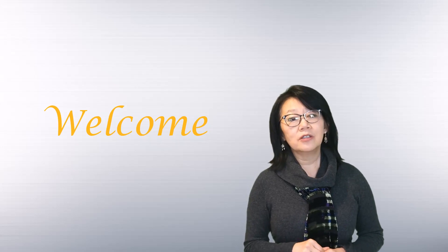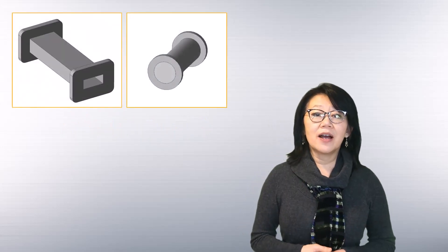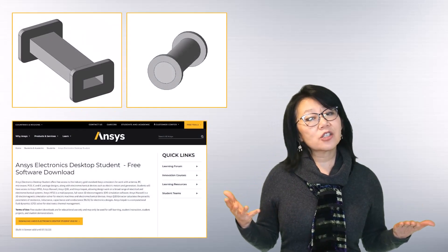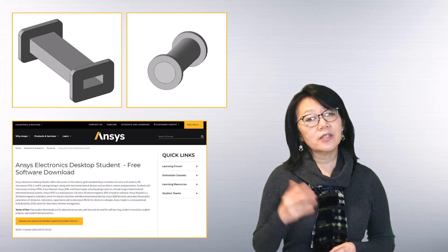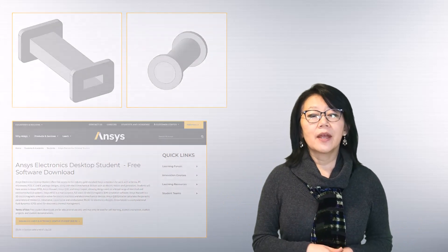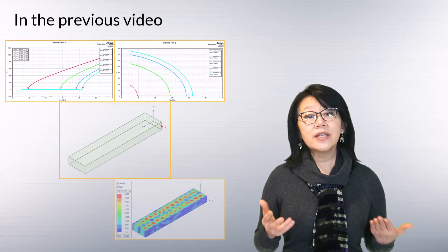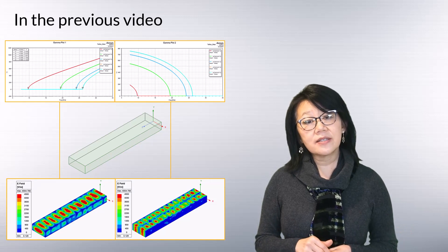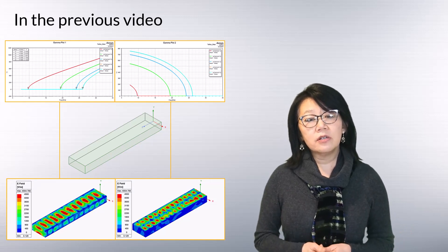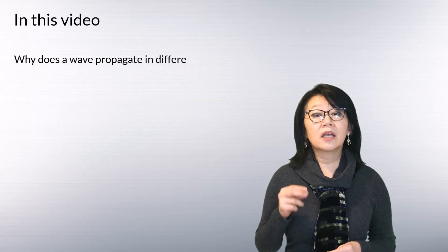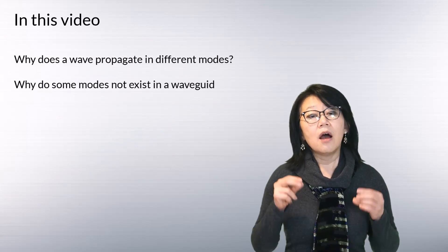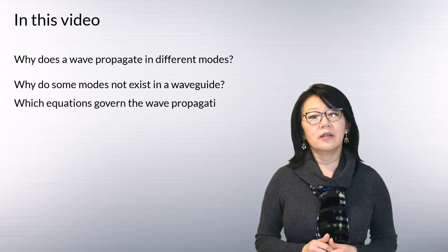Welcome back to this ANSYS module on designing waveguides using the ANSYS Electronic Desktop student version, AEDT for short. In the previous module we analyzed a rectangular waveguide using the AEDT HFSS simulation and looked at various results. In today's module our focus will be on the governing equations of a circular waveguide.